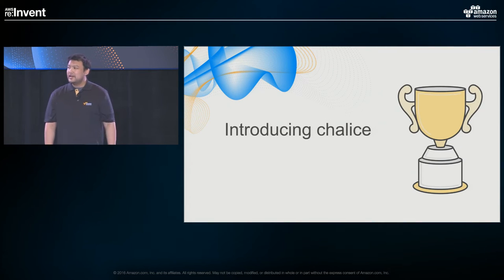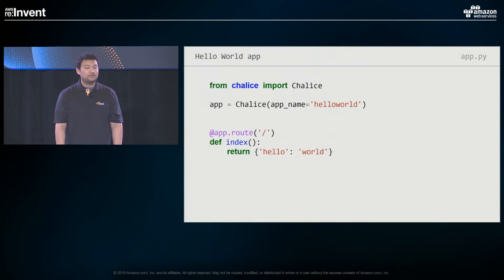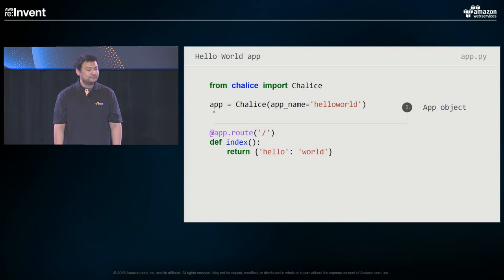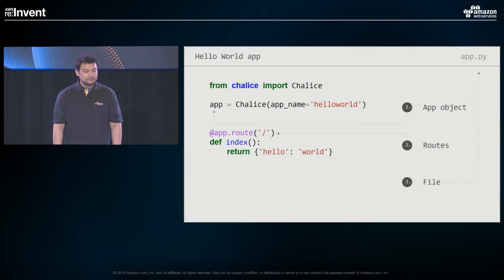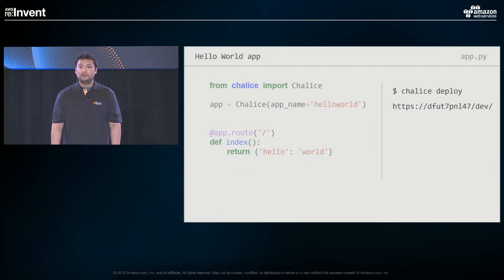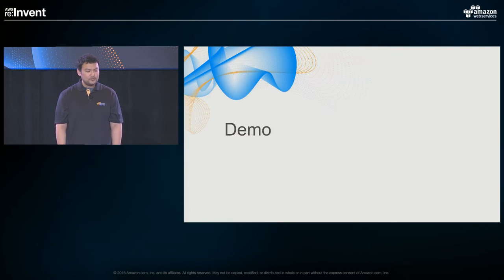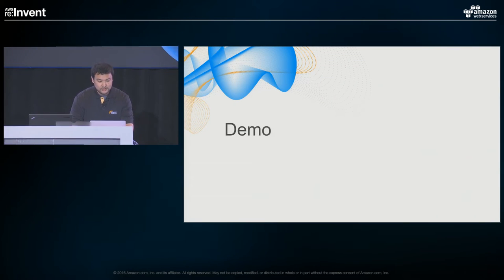Every Chalice app has the same three components. First, you create an app object. Second, you create one or more routes using a decorator-based routing syntax that Python developers will recognize from Flask or Bottle. Third, you put that in your app.py file — and that's all you need to get started. Once you have this set up, you use the Chalice CLI and run 'chalice deploy'. It sets everything up for you and gives you an endpoint. Let's hop over to the terminal and see this in action.